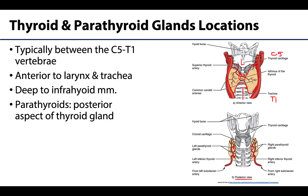There are typically four parathyroid glands: two sets of superior ones and two inferior ones. They don't have to be located on the posterior thyroid — they can be found anywhere in this general area — but this is the most typical location, and there can certainly be more or less due to variability.